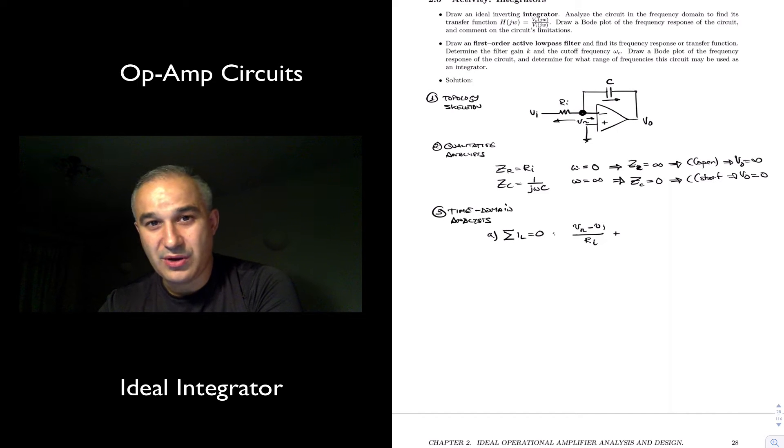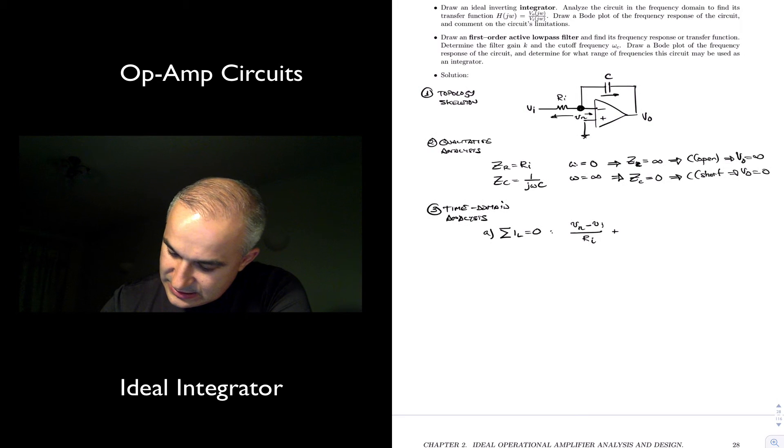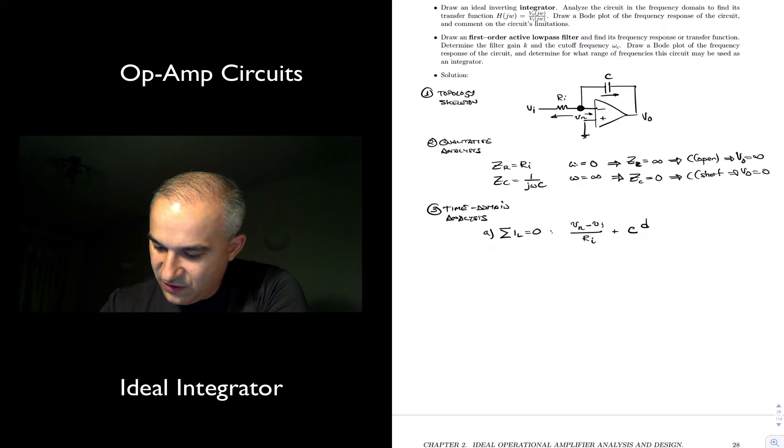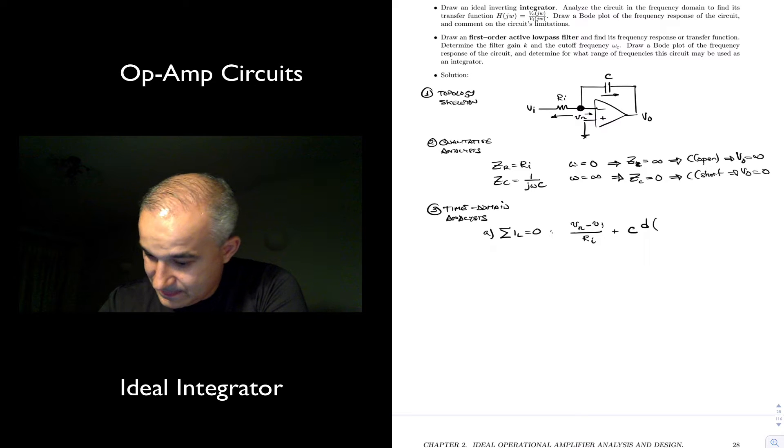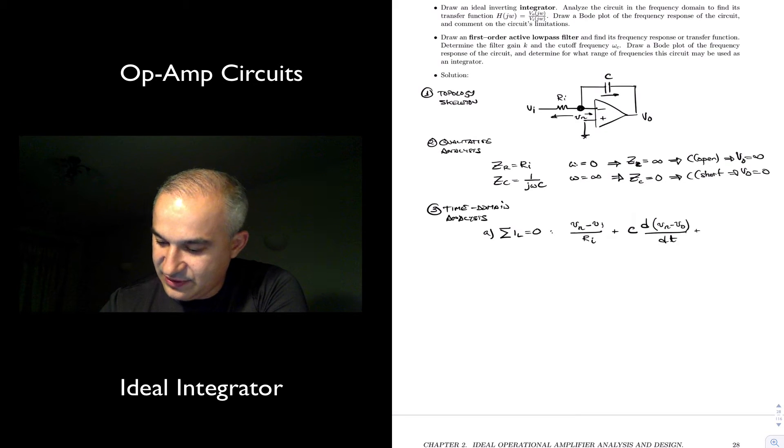Plus, and now we have to find the current going through the capacitor. In the time domain, what is the current going through a capacitor? Well, it is C, and then the derivative of the voltage across the capacitor. So in this case, the voltage will be, with this convention, Vm minus Vout over the derivative of this with respect to time. And then we have the other current, entering the bias current, I n, which is zero, equals to zero.